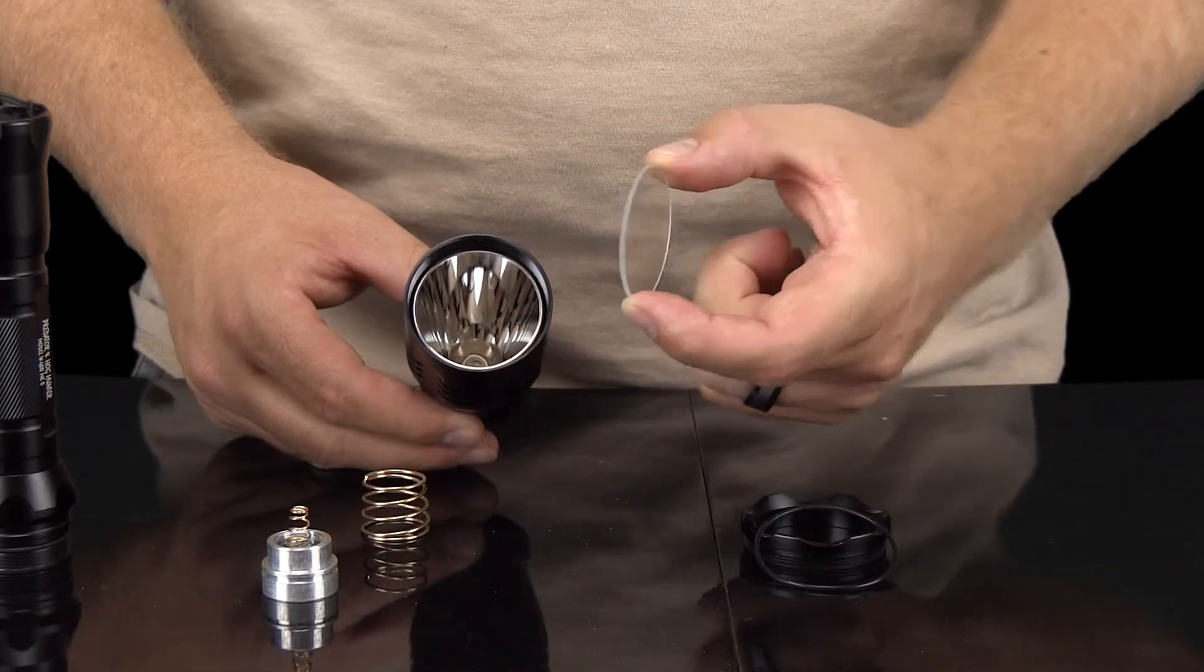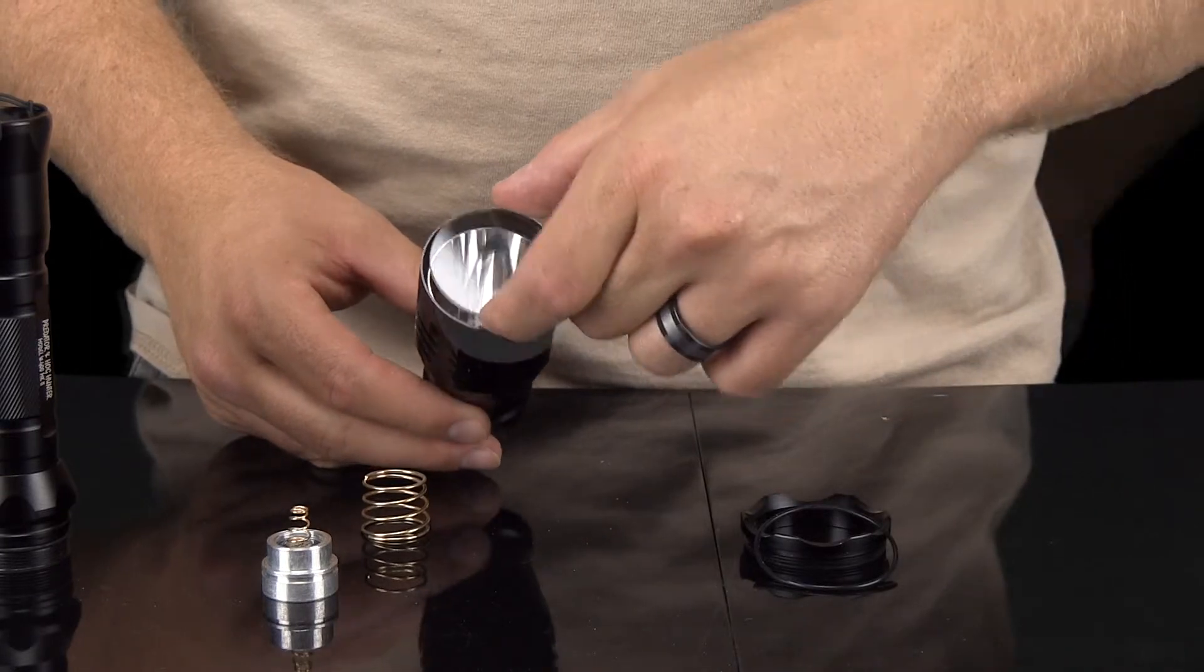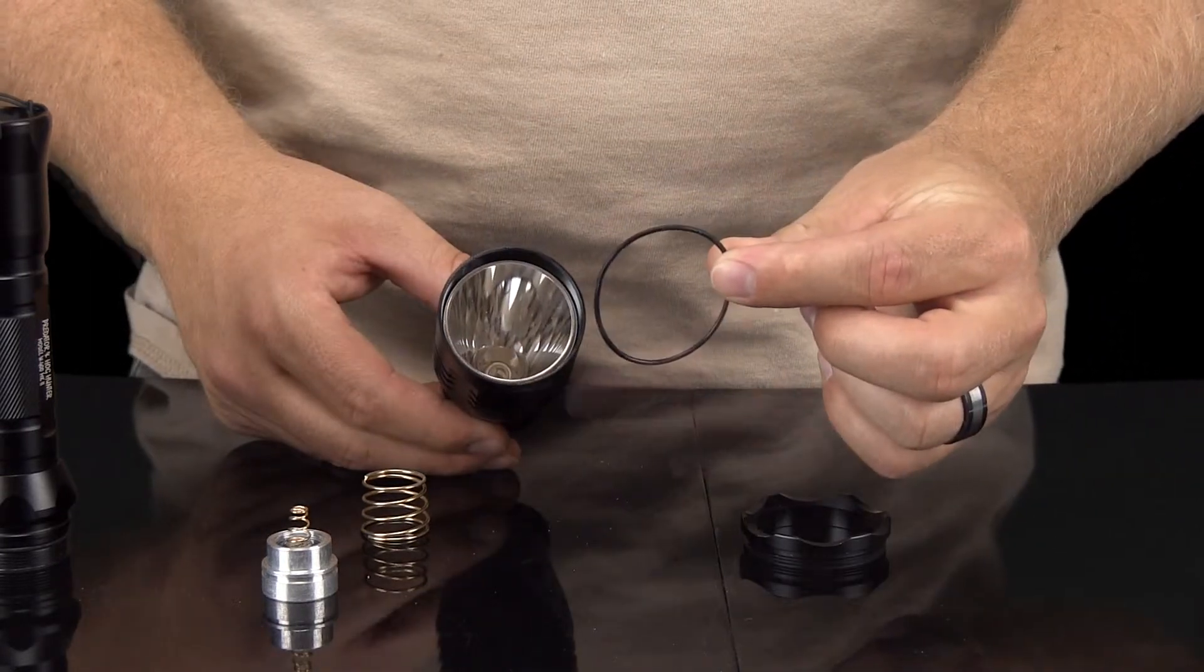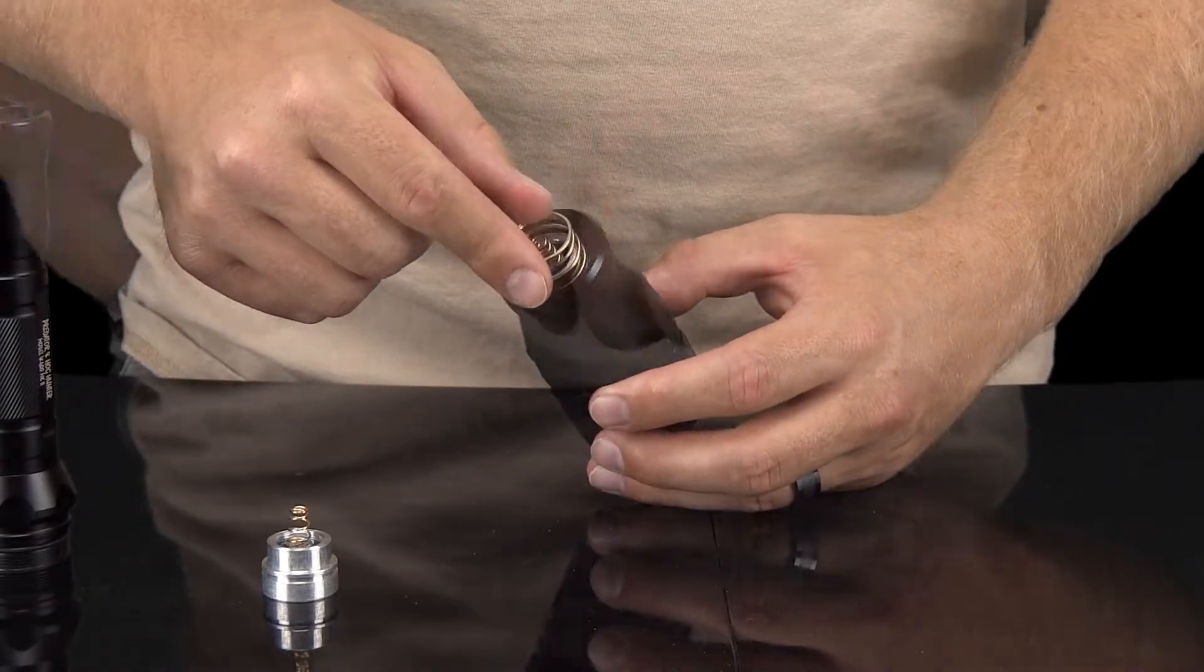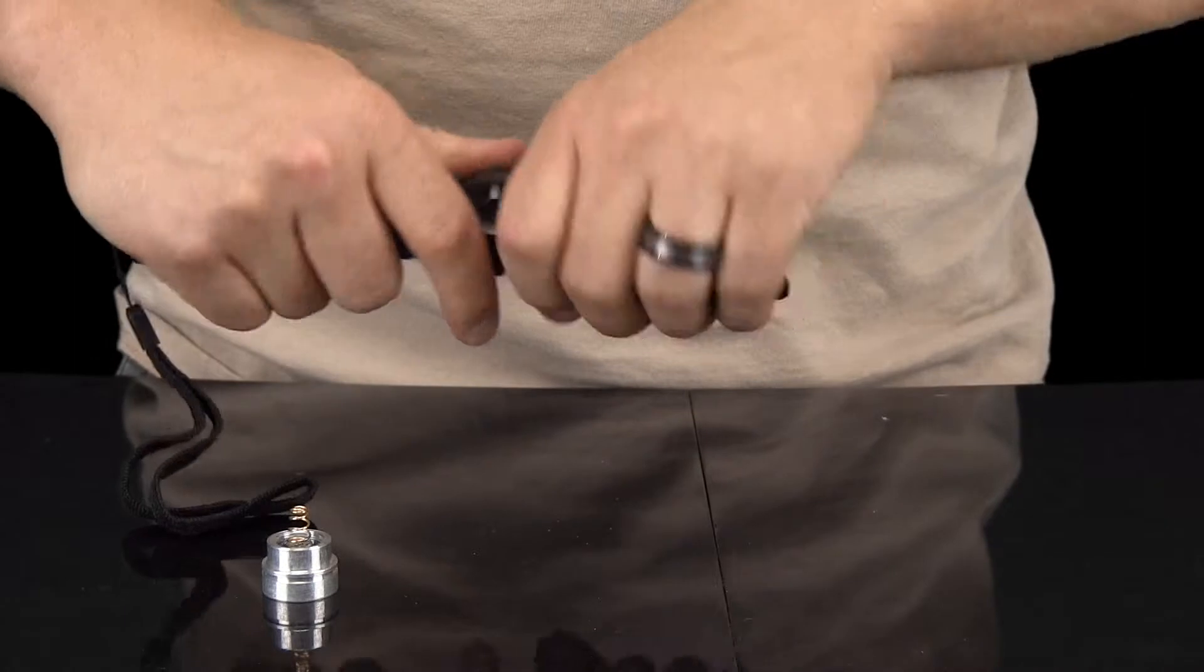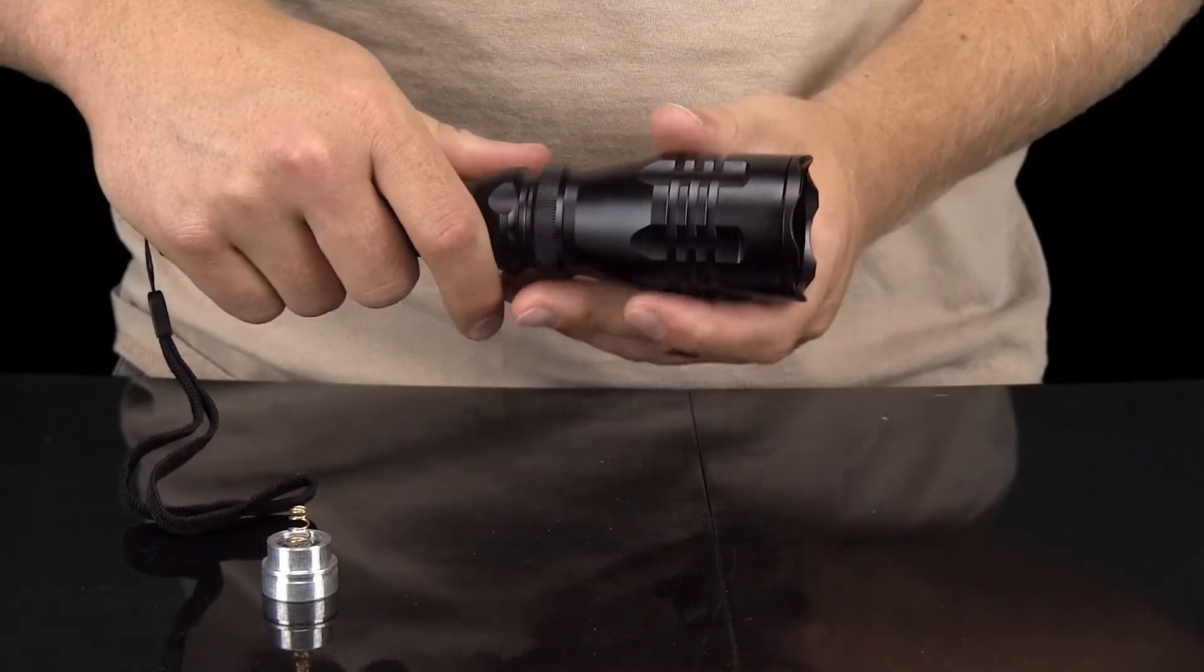Reassemble the bezel by putting the glass lens in first, followed by the O-ring. Screw in the bezel extension, replace the contact spring, and then reattach the bezel to the light housing, and you're good to go.